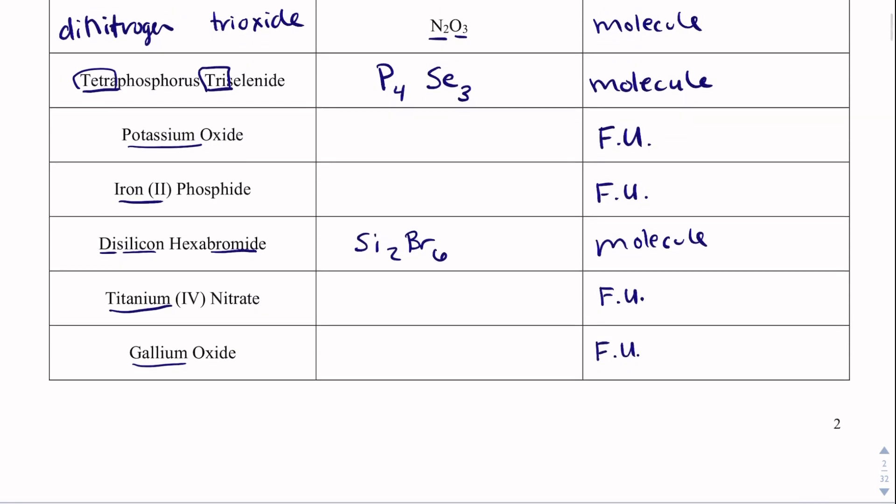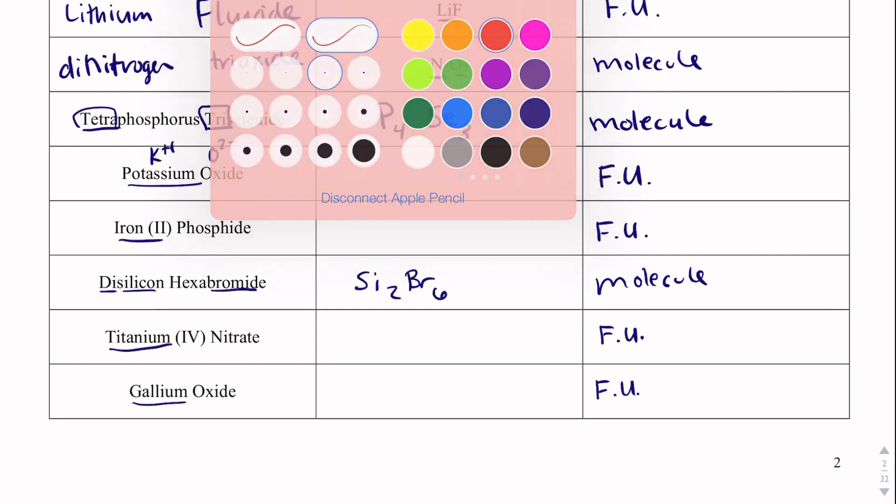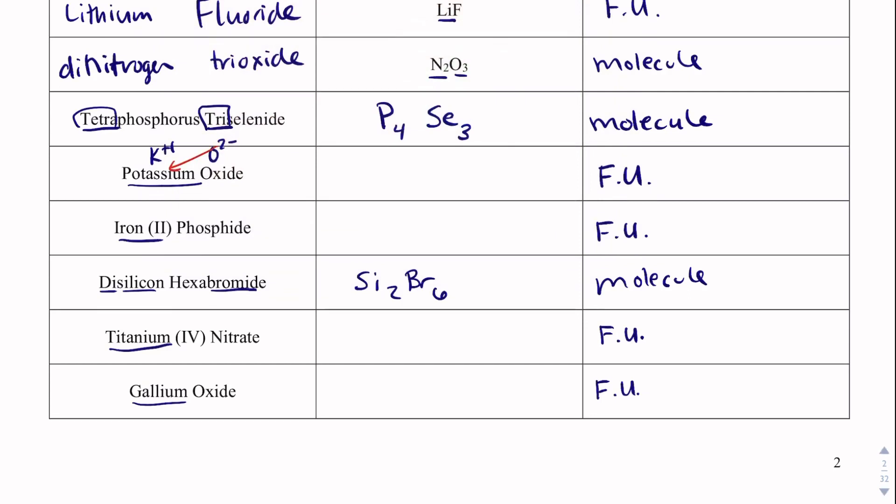We're going to do these last four, and then I want you to practice on Schoology. How do you get the formula? Go find potassium. That is K plus 1. Go find element number 8. That's oxygen, O2 minus. And then we want to crisscross the charges. So take that 2, give it to potassium, K2. Take that 1, give it to oxygen. We don't write 1s, so that will be K2O.